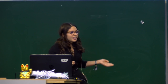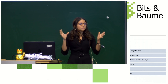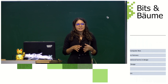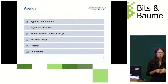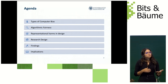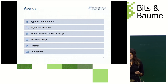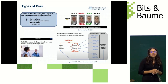Today I will give a brief introduction on types of bias. I will start very broad. I will speak a little bit about algorithmic fairness, but that's not going to be the main topic. I'm going to focus on the representational harms in artificial intelligence, and then introduce you to my research design, experimental design, our findings, and the implications that we found. So let's get to it.